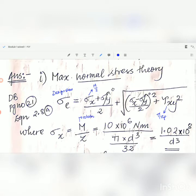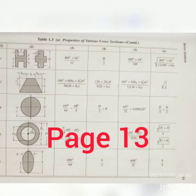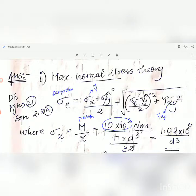It should be substituted in newton millimeter, so we have to multiply by 10 to the power 6. So 10 multiplied by 10 to the power 6 Nmm, and z equals pi d cubed by 32 for circular shaft. We will be getting sigma x in terms of d cubed: 1.02 into 10 to the power 8 by d cubed.